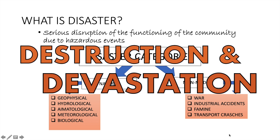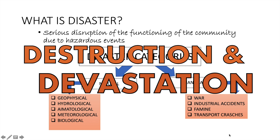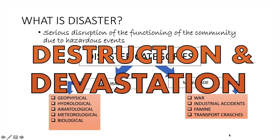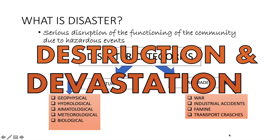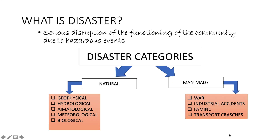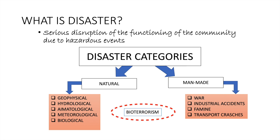Disaster can be natural or man-made — causing destruction and devastation that cannot be alleviated without assistance. However, some types of disaster can overlap between natural and man-made, like bioterrorism.